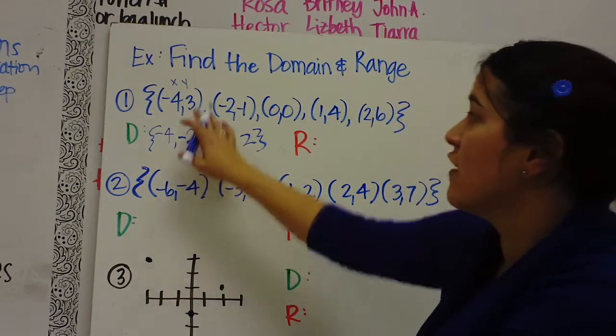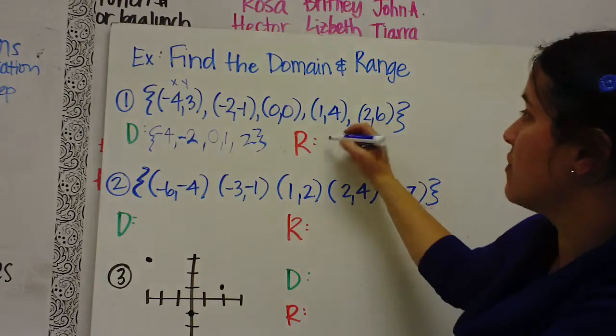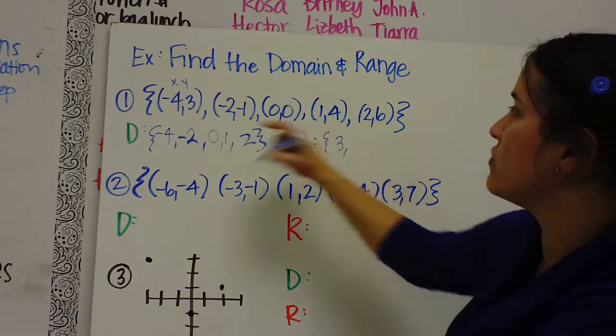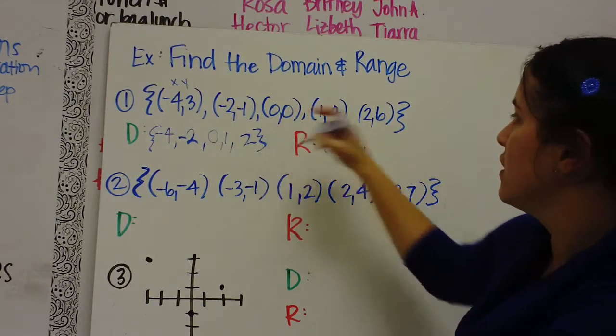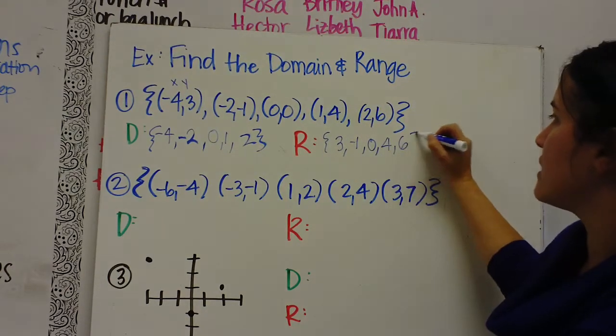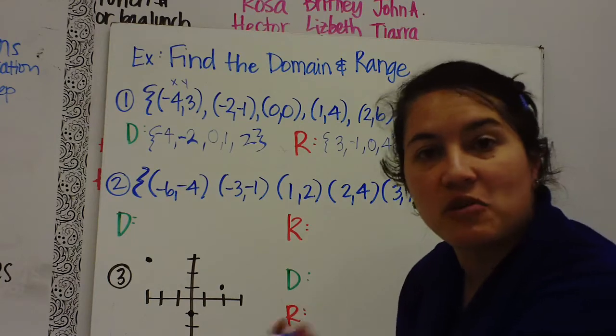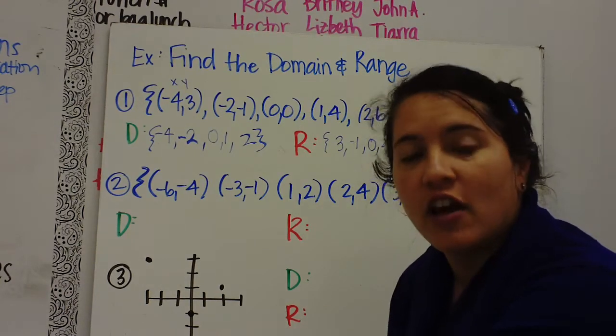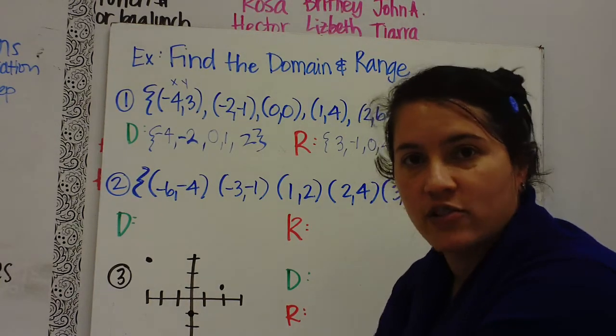The range values are the Y values, so those are going to be the second values. 3, negative 1, 0, 4, and 6. Anytime that you have to find the domain and range, the domain are your X values, the range are your Y values.